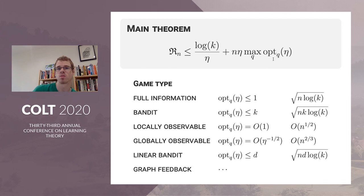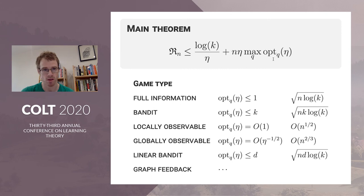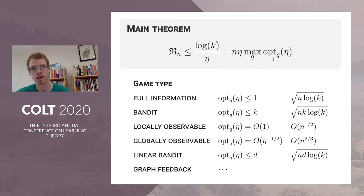The main theorem gives a very simple bound: regret is smaller than log K divided by the learning rate, plus n times the learning rate times the worst-case value of the optimization problem. For various games you can bound that worst case. Ignoring constants: for full information you get a bound less than one, giving square root of n log K, which is optimal. Similarly for bandits, linear bandits, and graph bandits we get the optimal thing. For locally observable games the worst case is order one, giving n to the one-half. For globally observable games you get order eta to the minus one-half, giving n to the two-thirds.